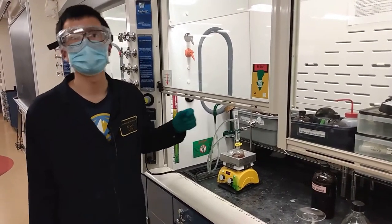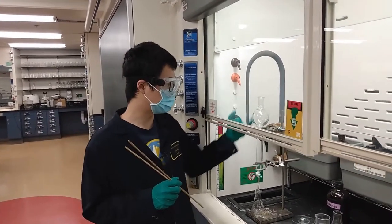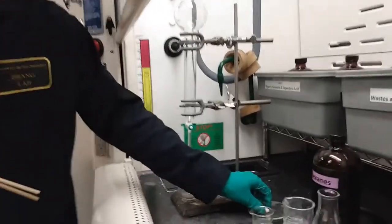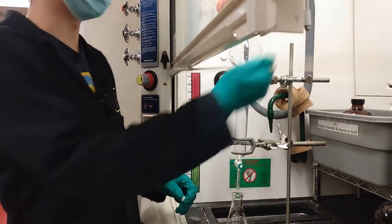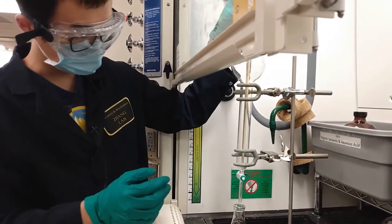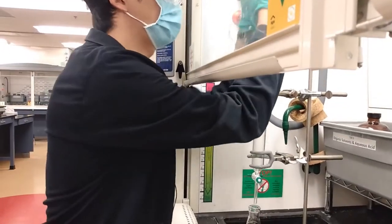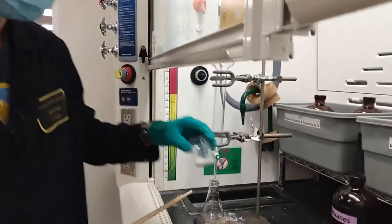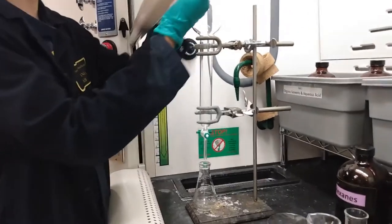To separate our product, we need to set up a column. This is the large-scale column. First we need to put this bottom ball inside the column and use two sticks to push it down like that. You can see I have already put the cotton at the bottom. Next we need to add some sand to the bottom, just on top of this cotton.